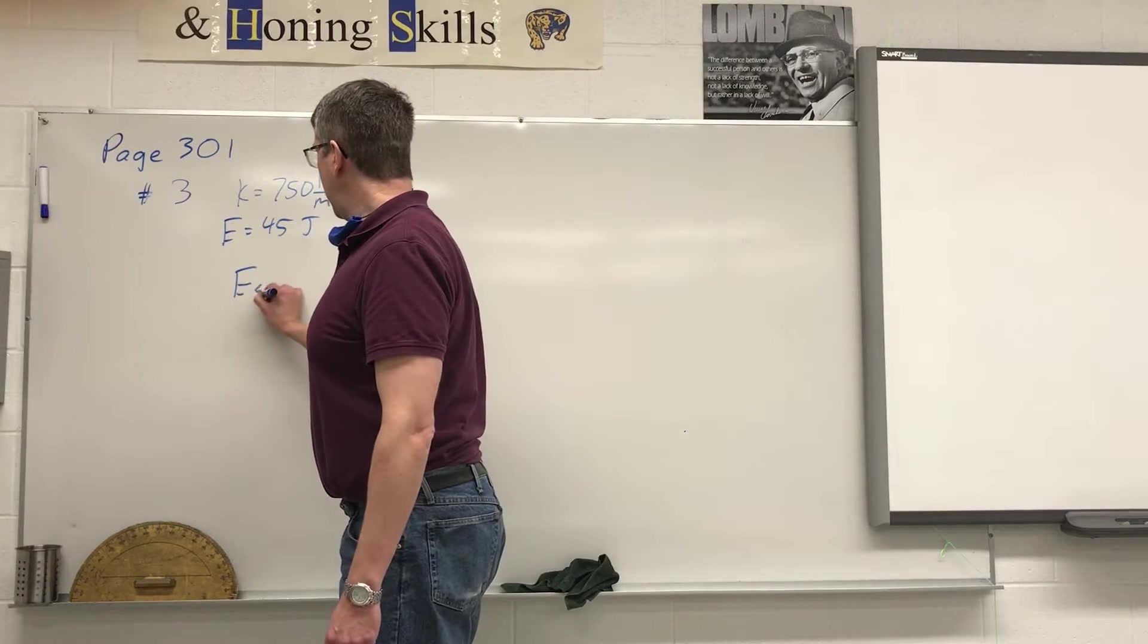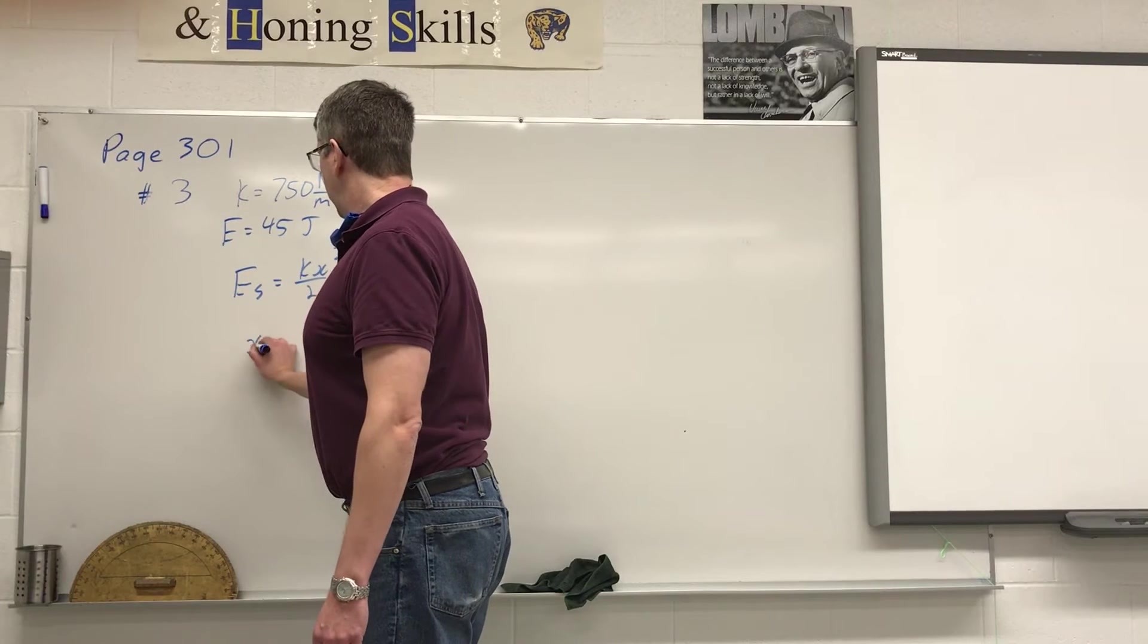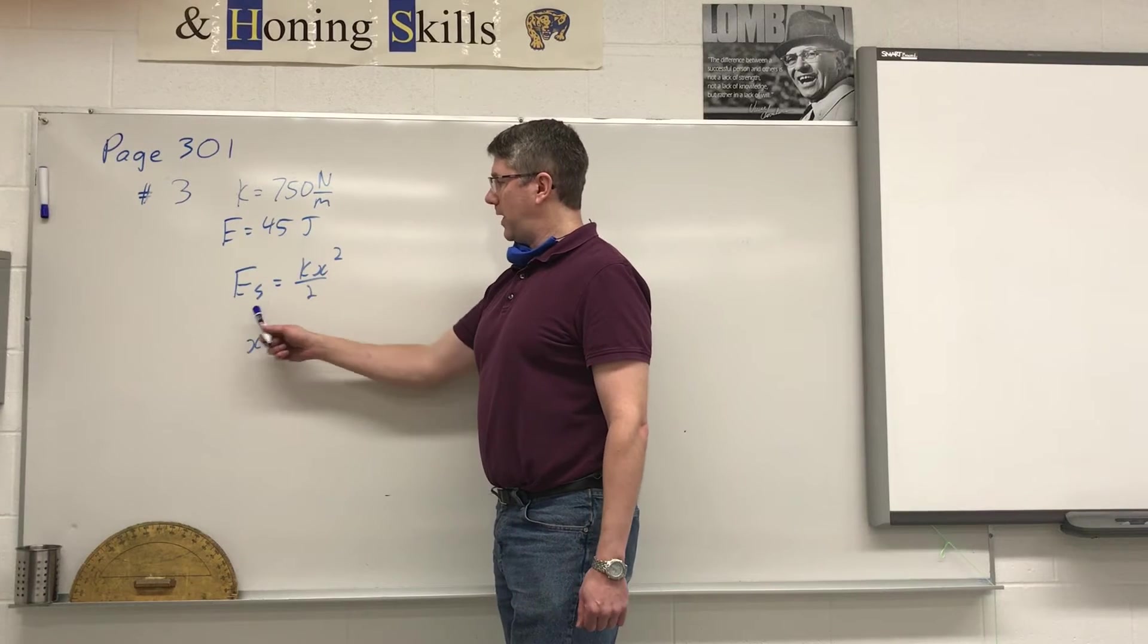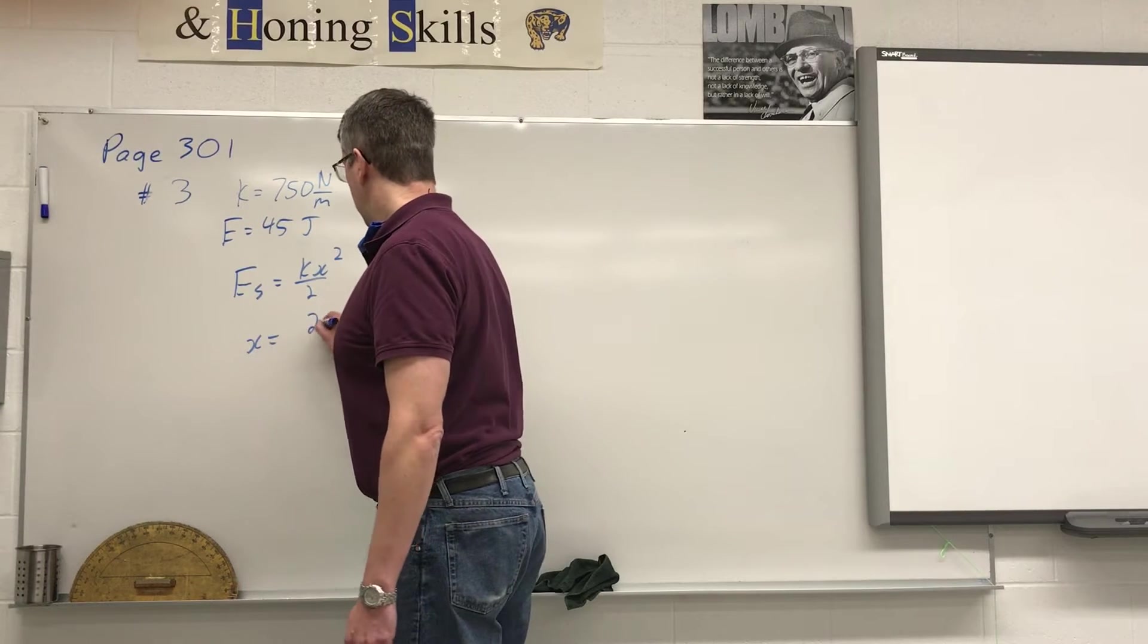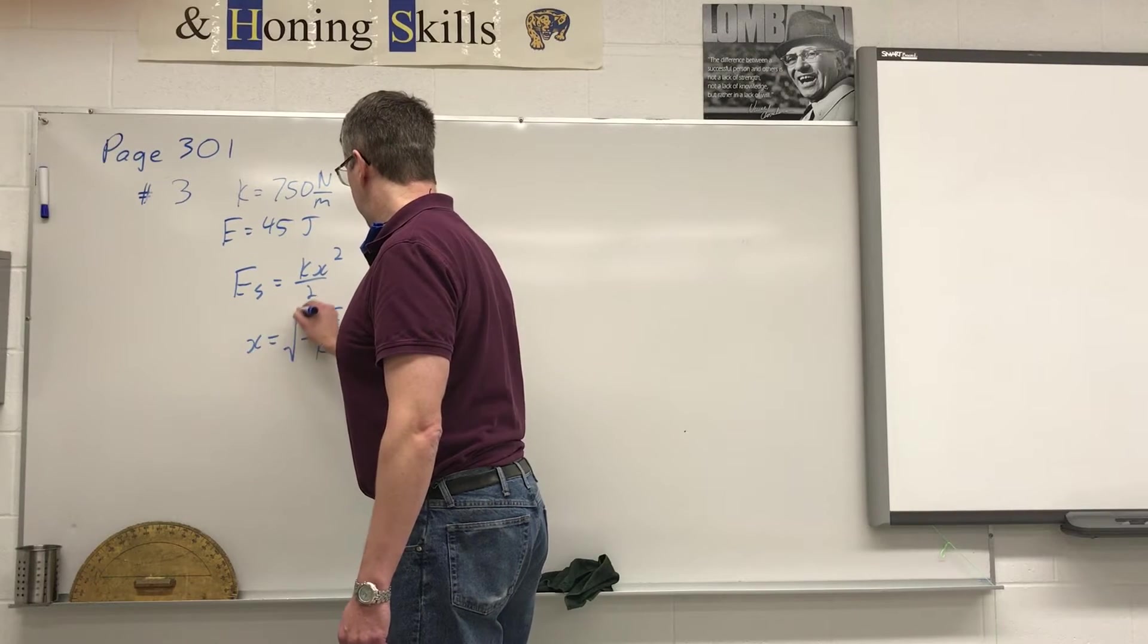Using our spring energy equation, kx squared divided by 2, we are rearranging for x. We have to multiply by 2, divide by k, and then square root. So we get 2 times the energy divided by k, and then we have the square root.